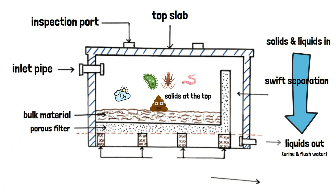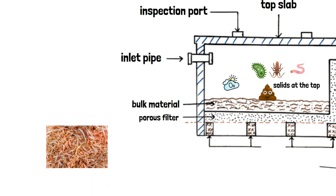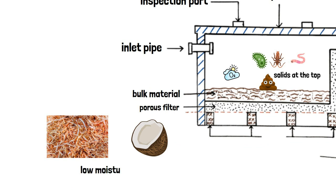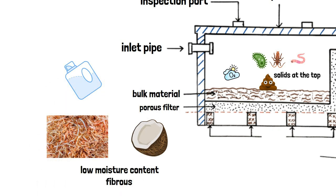To make it a conducive environment for degradation for the bacteria and the invertebrates, a layer of bulk material is placed at the top of the porous filter. Materials such as sawdust, coconut husks, wood shavings are good examples. Just ensure that they have low moisture content and are fibrous in nature. Another function of the bulk material is to absorb the harsh chemicals that get poured in with flush water.